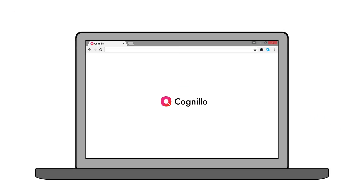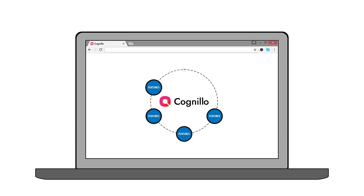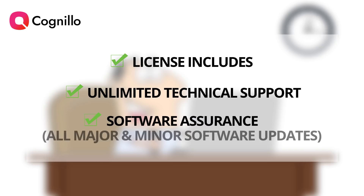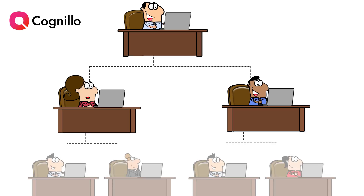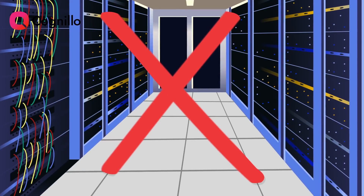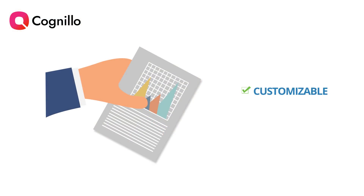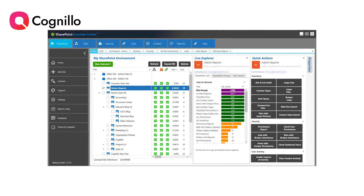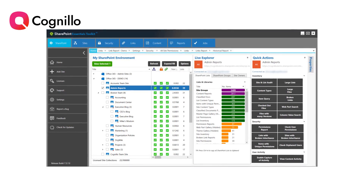The SharePoint Essentials Toolkit bundle includes all current and future components of the suite, so Mike doesn't have to worry about upgrading or paying for extra features if they're added in the future. The license also includes unlimited technical support and software assurance so you know your team is covered. It's simple to use for site owners and administrators of all technical levels and it doesn't require any server-side installation. The feature-rich, detailed and customizable reports are simple to generate and fully exportable, and the intuitive dashboard design lets Mike see all of the sites he's responsible for and easily review SharePoint reports for each one of them.